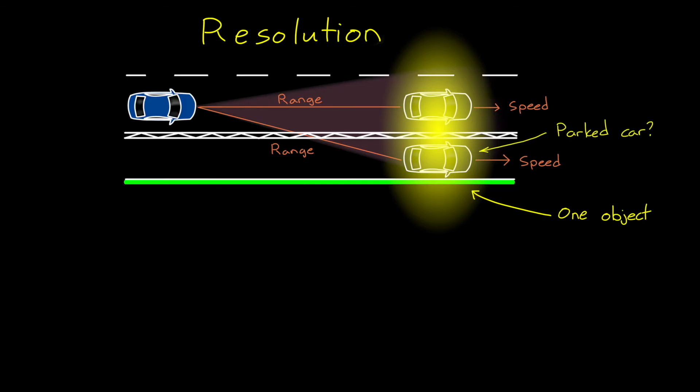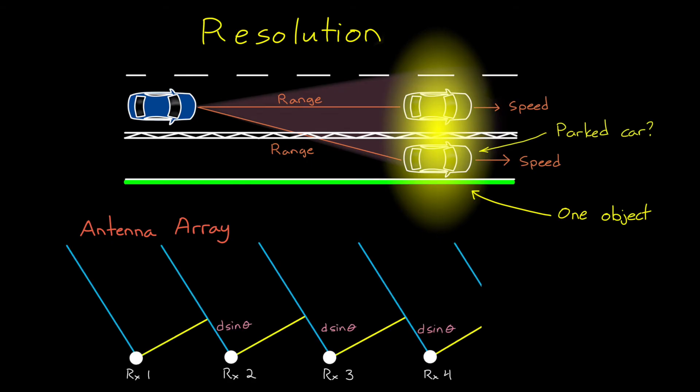And we saw that accuracy is a function of noise. But resolution is a function of the radar's aperture, or the size of the antenna array. By adding more receive antennas to the array, we can increase the angular resolution of the radar. And we can keep adding receive antennas, each set a half wavelength apart from each other.